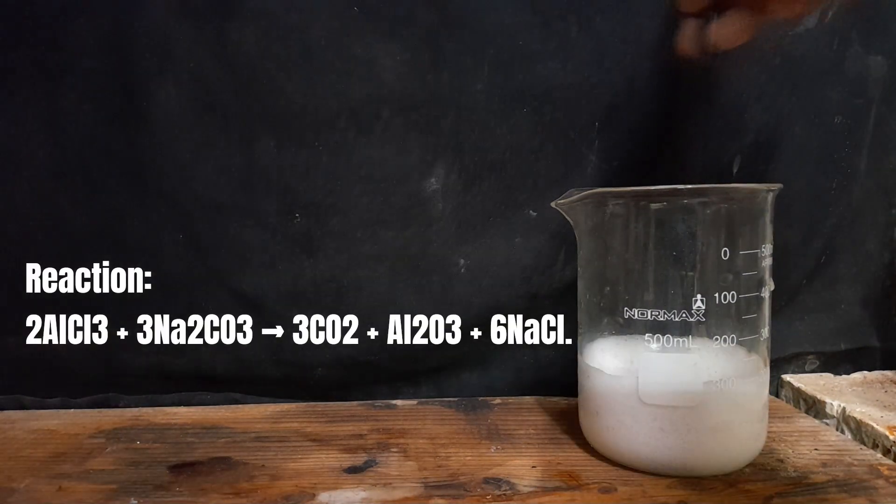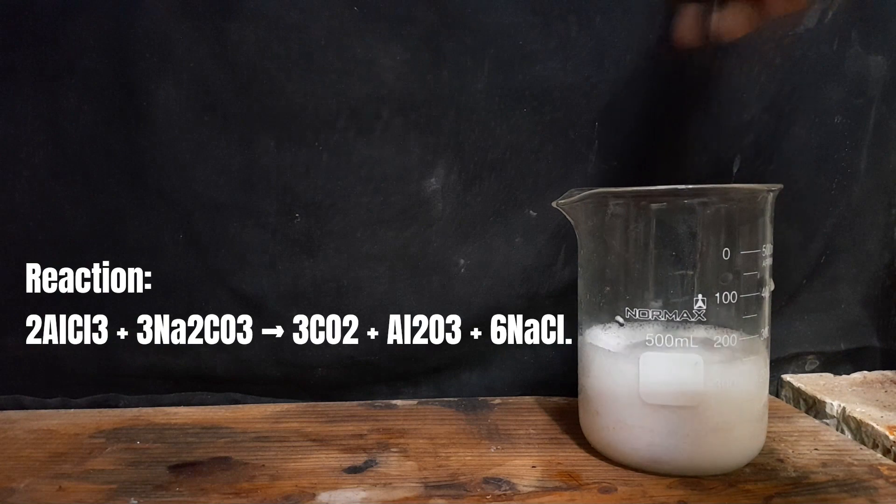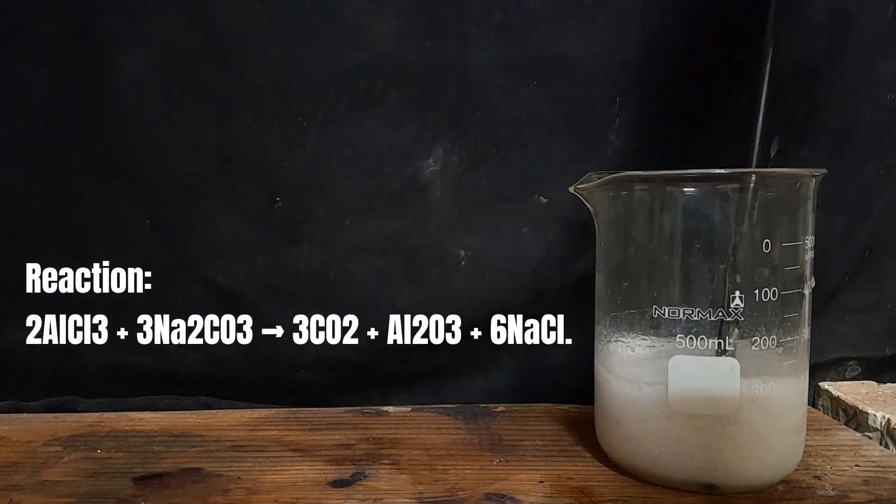Aluminium chloride react with sodium carbonate and form carbon dioxide gas, aluminum oxide, and sodium chloride.